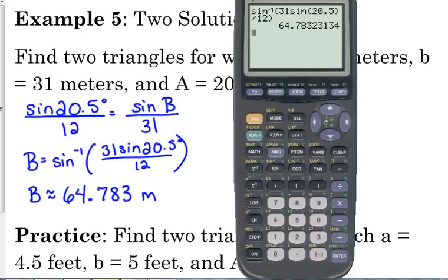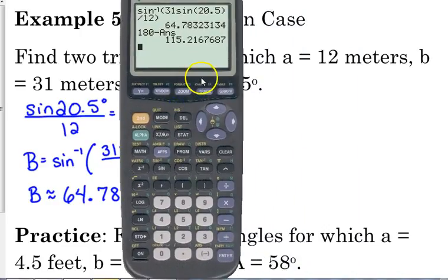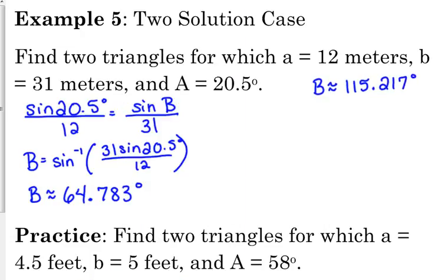Now, what we're going to do is I said that there was a possibility for two triangles. So that, oh wait, it's not meters, it's degrees, because I'm talking about the angle. My fault. Degrees. I said that there's the potential for two triangles, so what you're going to do is you're going to use 64.783 as a reference angle. So you're going to do 180 minus that answer to get the other possibility for angle B. So angle B could also be 115.217 degrees.